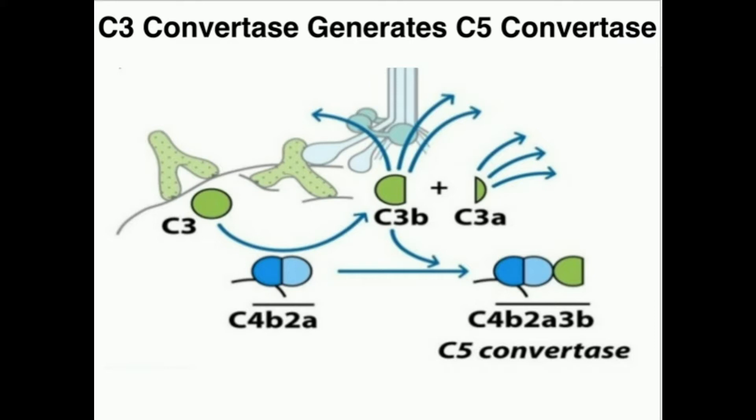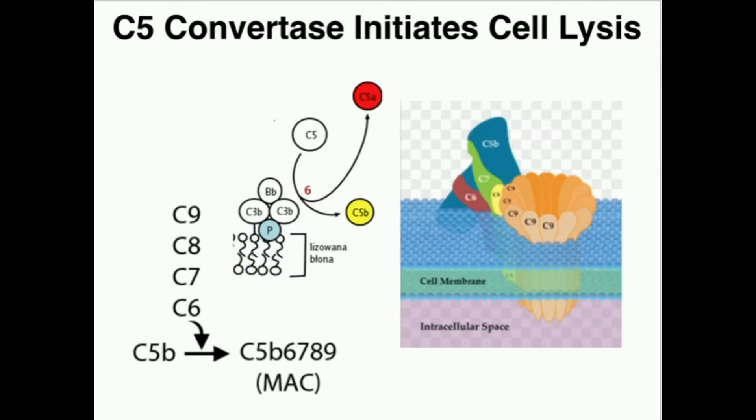C3B remains bound to the pathogen or whatever it is that we're attacking. The A component floats away and in general the B components remain bound. Those are what facilitate the formation of the membrane attack complex. But it's not like those A components are useless — in fact, they're very important. Our cells are going to make use of every component. The B components help form the membrane attack complex. The A components are what we call anaphylatoxins.